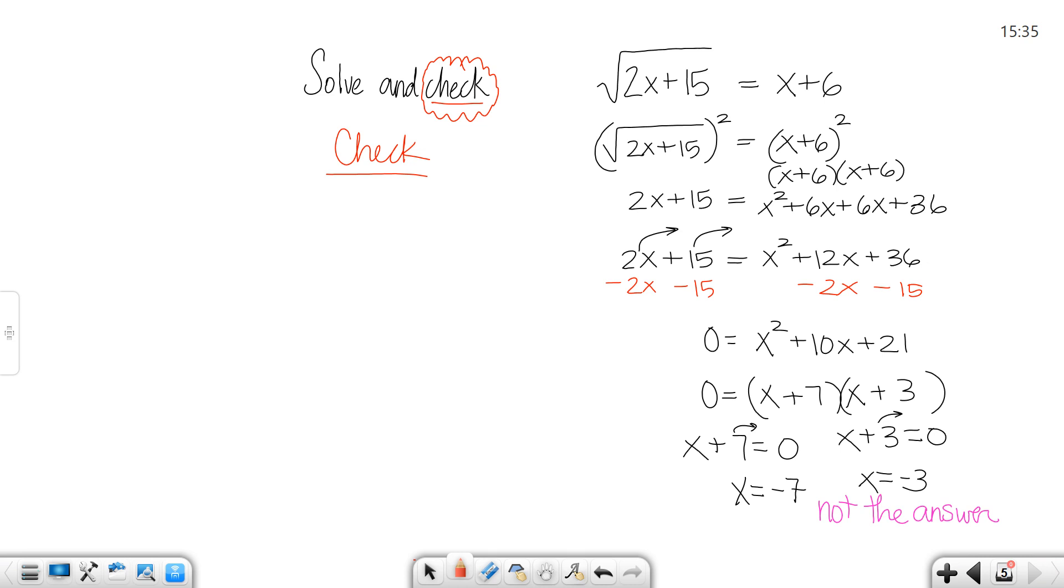So let's check the negative 7. When you plug in negative 7, you get 2 times negative 7 plus 15 inside the radical equals negative 7 plus 6. So inside the radical, you would have the square root of 1. And on this right side, you would get negative 1. Well, 1 does not equal negative 1, so this is a false statement. And that means that negative 7 is bad. It does not work.